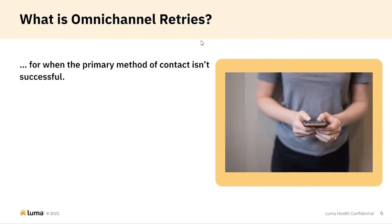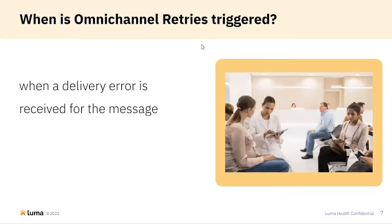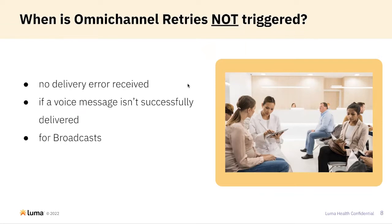We do this when the primary method of contact isn't successful and there's another contact method available to send a message to. The specifics of when this happens is when a delivery error is received for a message — typically errors we've identified as a contact not being available. Things we're very confident mean that we can't contact that patient over that method. There are some specifics about when we will and won't send these retries.